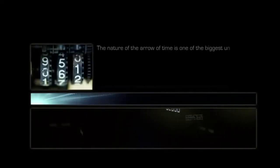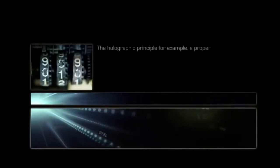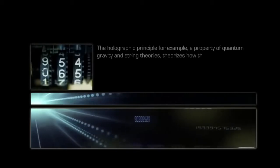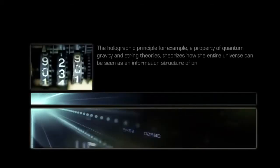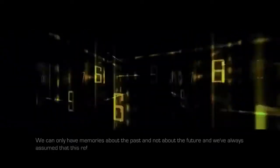The nature of the arrow of time is one of the biggest unsolved problems in physics and has been responsible for many new popular interpretations. The holographic principle, for example, a property of quantum gravity and string theories, theorizes how the entire universe can be seen as an information structure of only two dimensions. We traditionally associate the notion of an arrow of time with the sequence of events. The nature of time is one of the elements that we experience through the arrangement of short-term and long-term memories. We can only have memories about the past and not about the future.